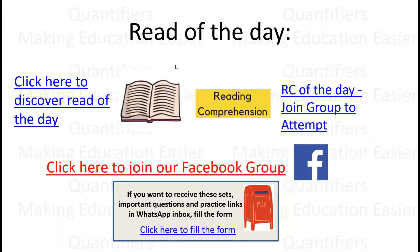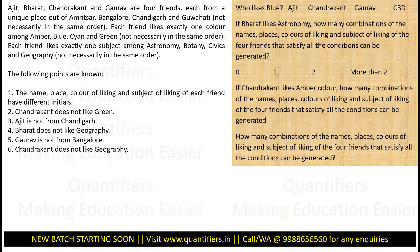If you are serious, it is a must join for you. Let's see what the set for today holds for us. It says Ajit, Bharat, Chandrakant, and Gaurav are four friends, each from a unique place out of Amritsar, Bangalore, Chandigarh, and Guwahati — not in the same order. Each friend likes one color and one subject — astronomy, botany, civics, and geography — not in the same order.